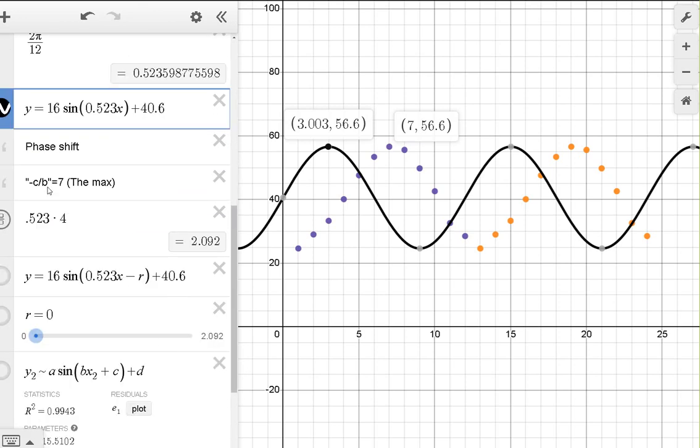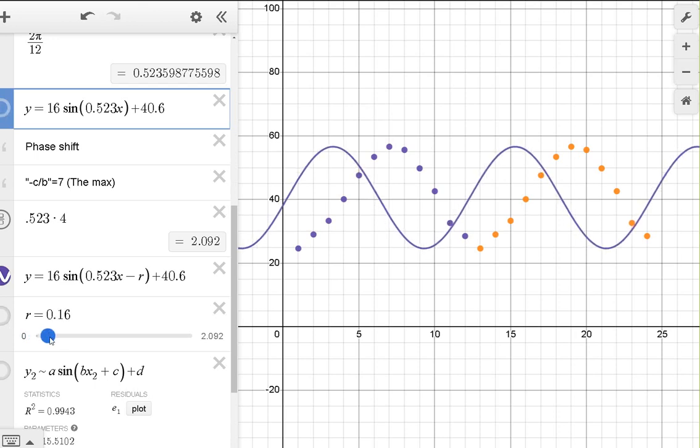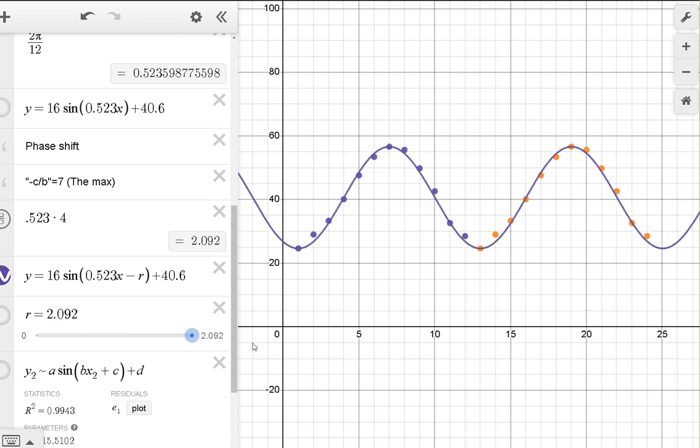You can solve for the phase shift. Basically, you're going to have negative C over B has to equal 7. That's where your maximum is. So what's the value of C that makes that happen? That value is going to be 2.092 when you solve for it. So you don't have to make this little slider bar here. I did it for dramatic effect. But let's slide that value over into place. That's kind of cool.